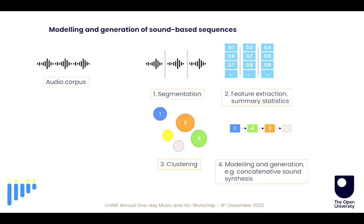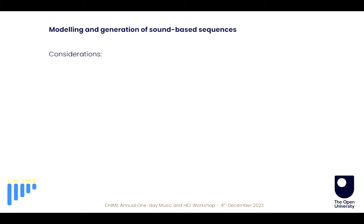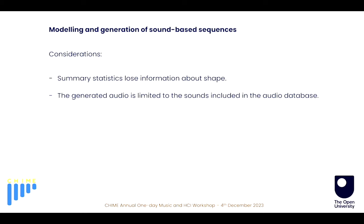There are a number of limitations with this approach. The first one is that if we compute summary statistics on the content of each segment, we lose information about shapes. As we saw, in sound-based music it's very important how features develop inside segments — so the shape of these features. Second, the generated audio is limited to the sounds included in the audio database. So we have an audio database we segmented, and to generate sequences we can only use those sounds.